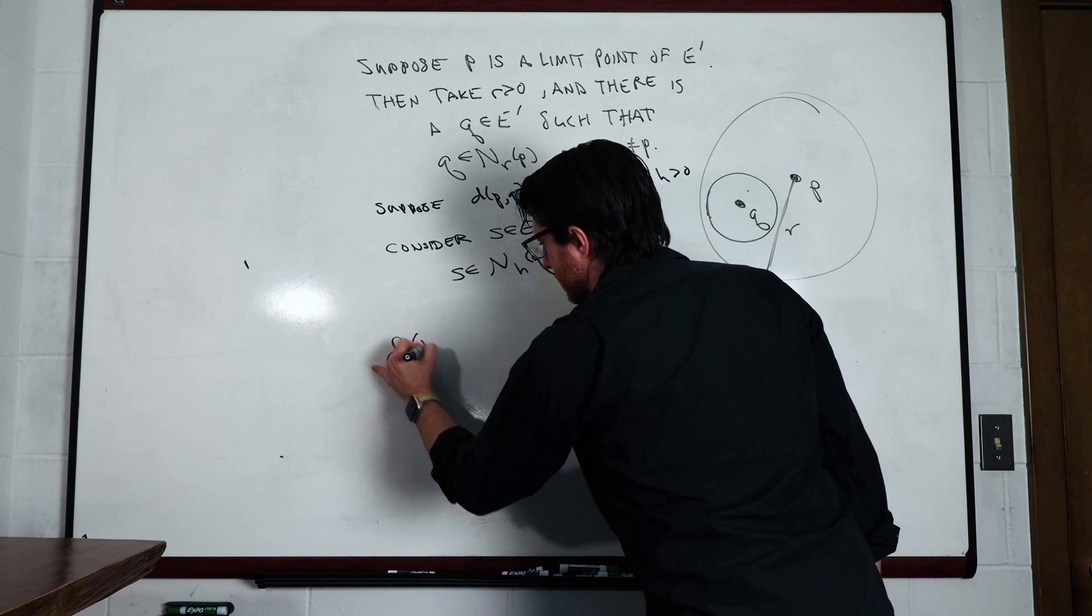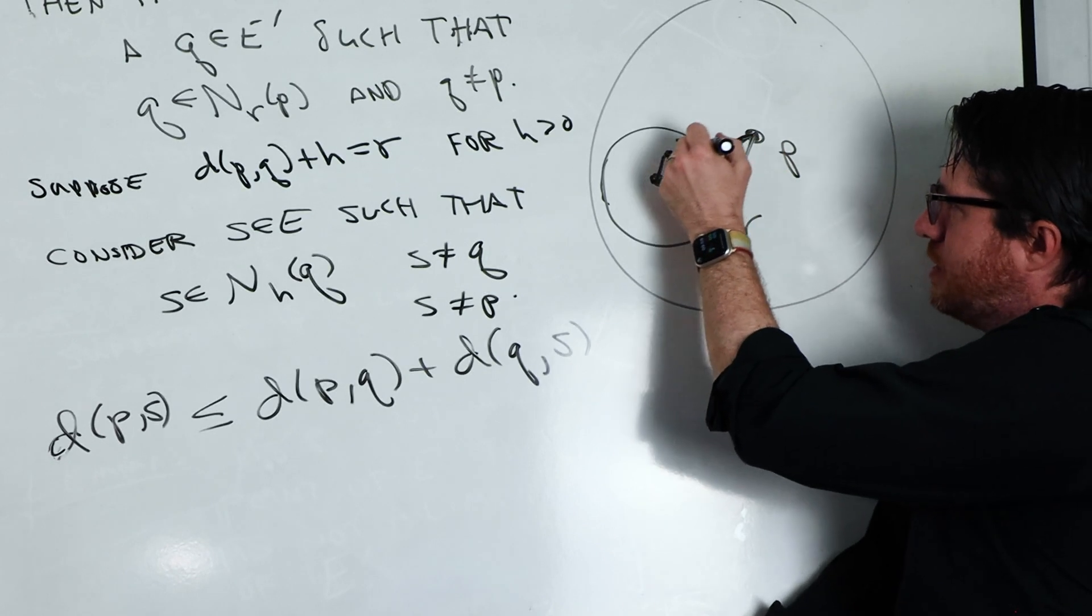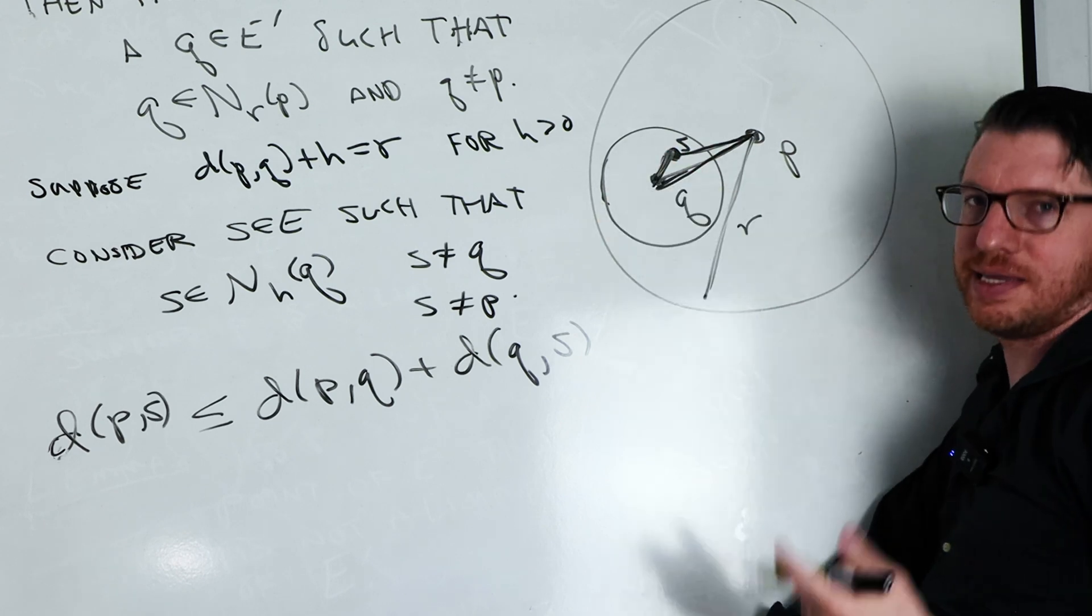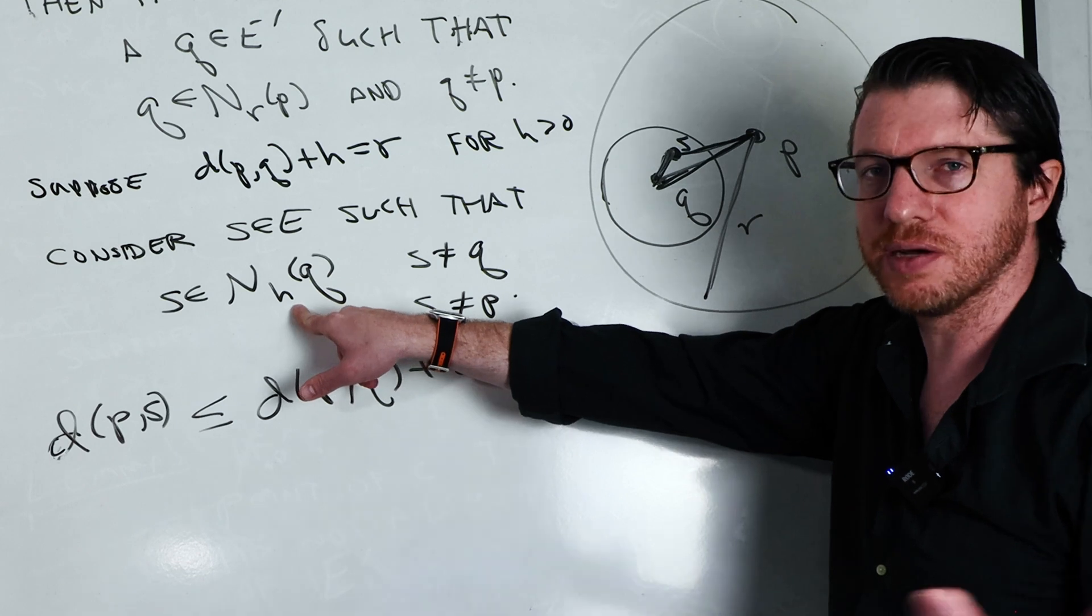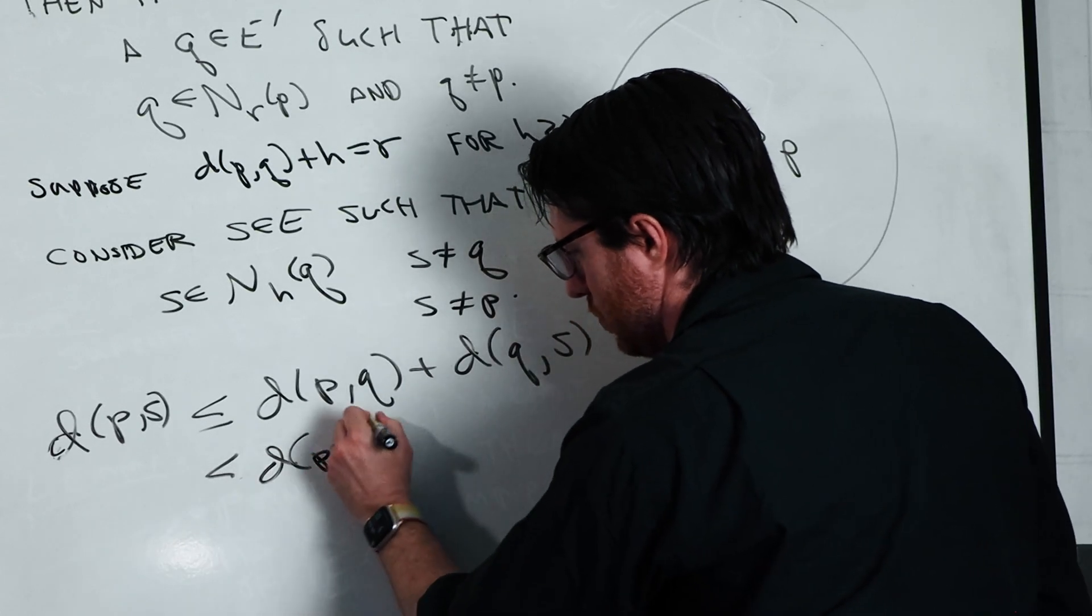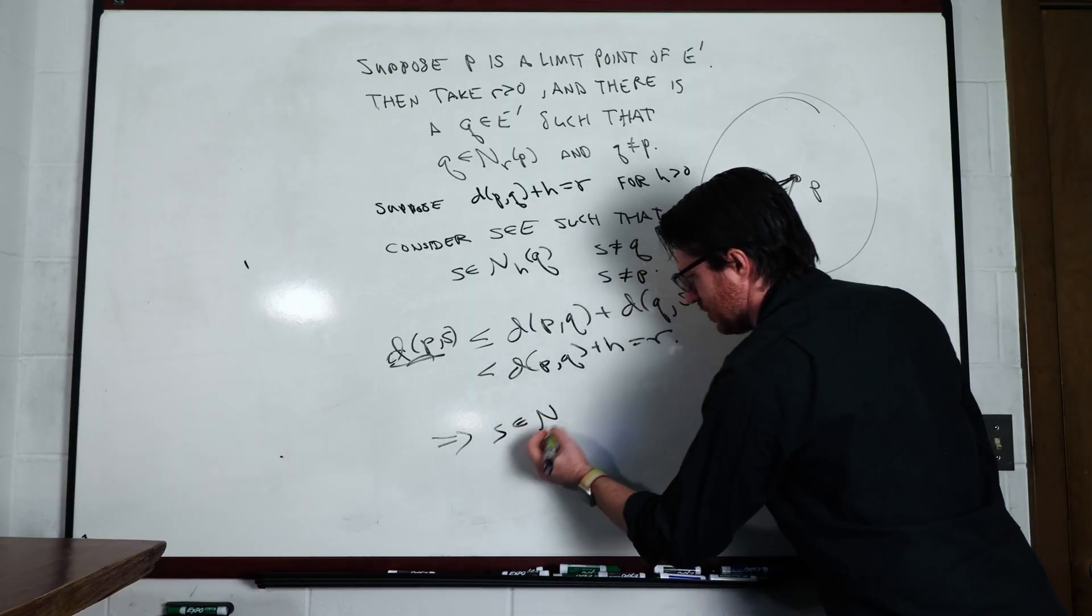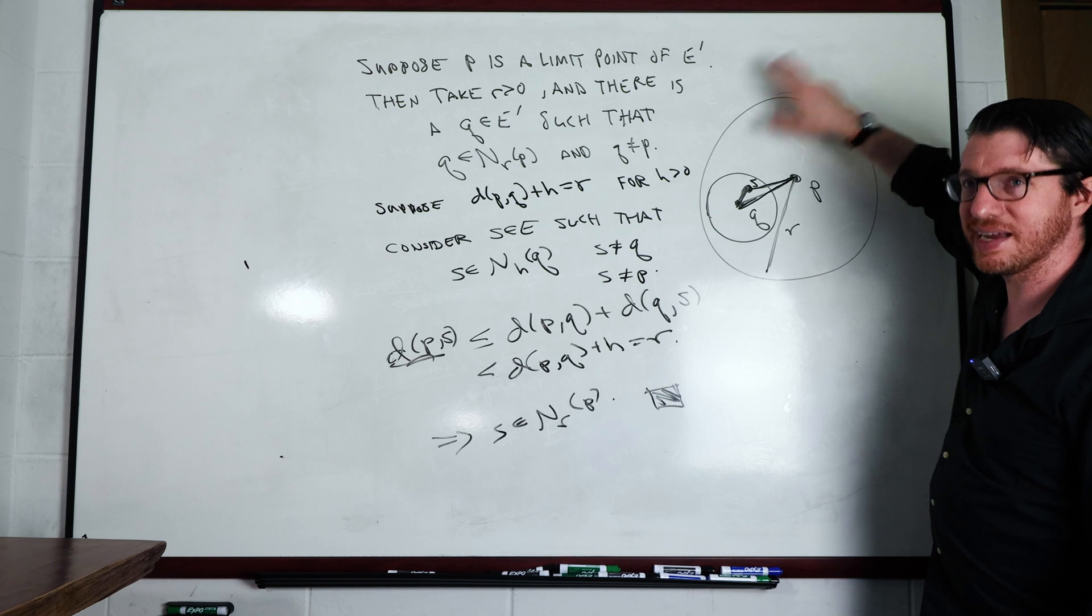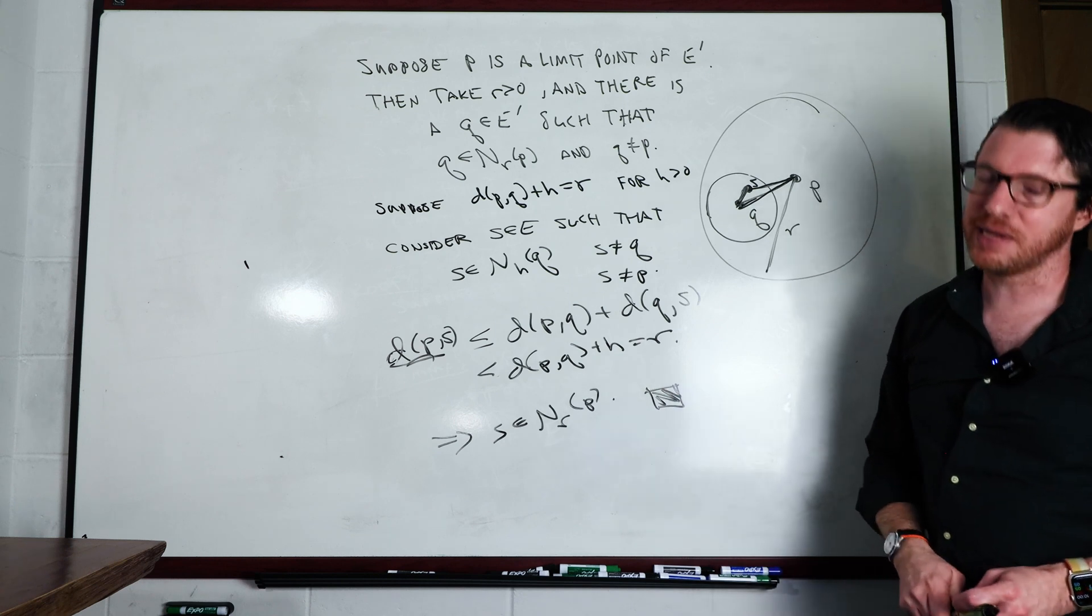And the way we do that is just by using a triangle inequality. So we just want to show that this distance between P and S is less than R. We're saying that the distance between P and S is less than the sum of the distance between P and Q and the distance between Q and S. That's what we're doing right now. And we know that distance between Q and S itself is strictly less than H because S comes from its neighborhood. So that means that we have this is strictly less than DPQ plus H. But this is exactly equal to R. And so that means that S is inside of the neighborhood of radius R about P. So that basically takes care of the lemma because for any limit point of E prime, we can take a neighborhood of that point and we can find an element of E in there, which means that it is also a limit point for E.